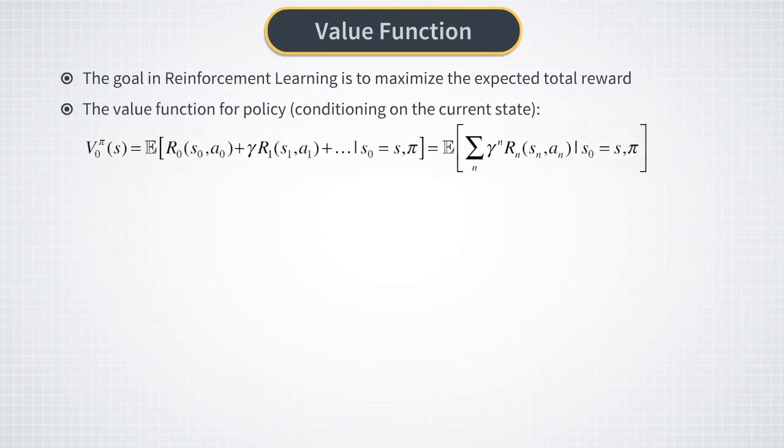In addition, the value function V has an upper script pi to emphasize its dependence on the policy chosen to accumulate rewards. It has a lower index that specifies the time at which the system has the state vector s. We use discrete notation for time as we work in discrete time with Markov decision processes, and therefore in this formula we show the value function defined for time 0 by using the lower index of 0.